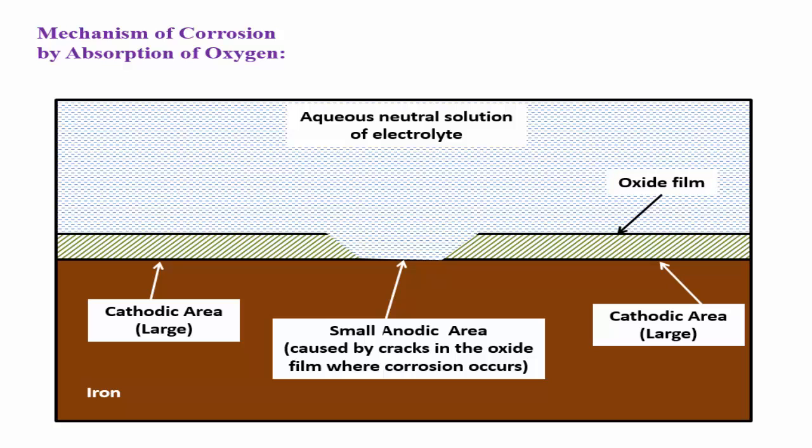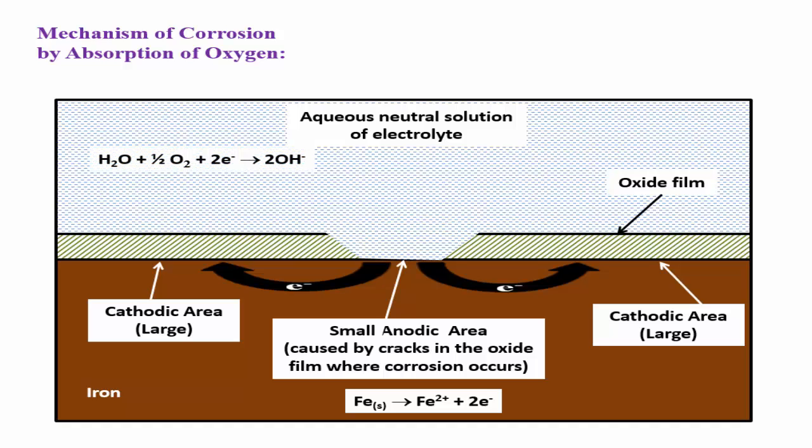Iron undergoes oxidation to give Fe2+ and two electrons. These electrons are consumed at the cathode. At the cathode, reduction occurs and oxygen in the neutral solution consumes these electrons with water to give 2OH- ions.